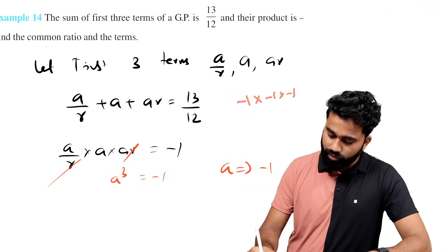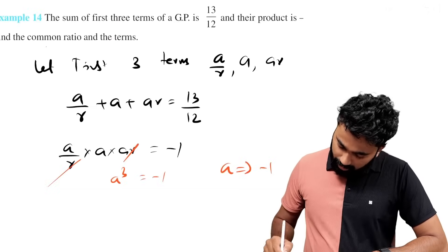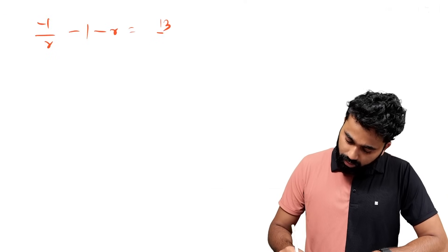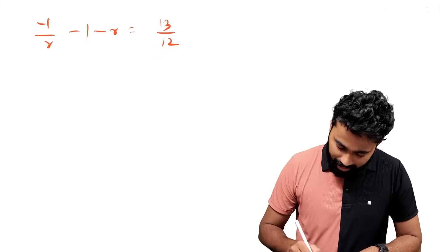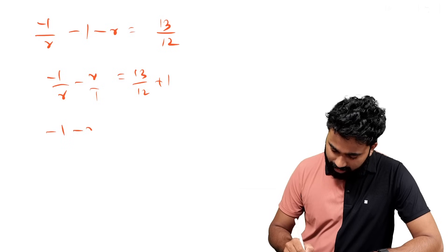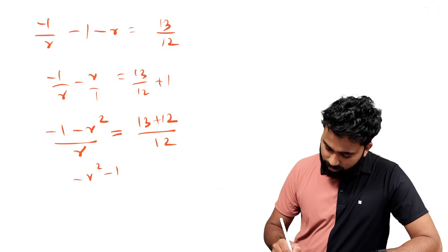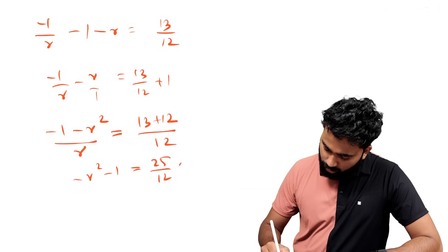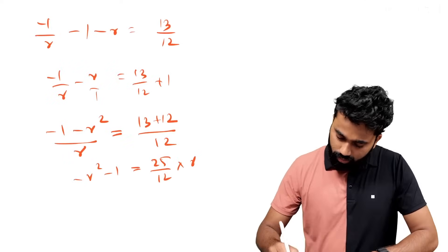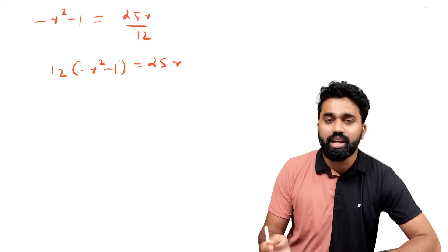Now A is equal to minus 1. So substituting: minus 1 by R plus minus 1 plus minus 1 times R equal to 13 by 12. This simplifies and is equal to minus 1. The result is equal to 25 by 12 by R, equal to minus 1.